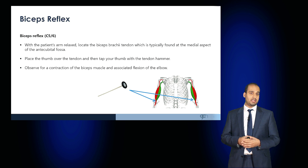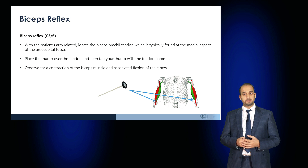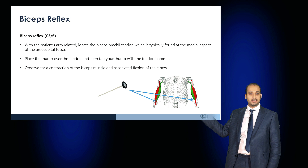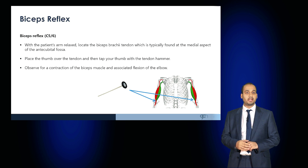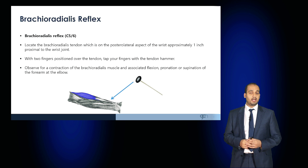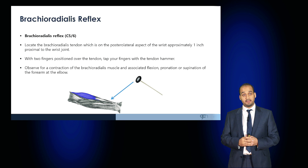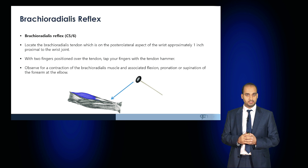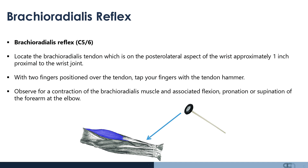There are three key reflexes in the arms. The biceps reflex, mediated through C5 and C6: the patient's arm is relaxed, the biceps brachii tendon is located at the medial aspect of the antecubital fossa, the examiner's thumb is placed over this tendon and tapped with the tendon hammer, and you observe for a contraction of the biceps muscle with flexion of the elbow. The brachioradialis reflex, also through C5 and C6: locate the brachioradialis tendon on the posterolateral aspect of the wrist approximately one inch proximal to the wrist joint, place two fingers over the tendon, tap with the tendon hammer, and observe for contraction and flexion, pronation, or supination of the forearm.